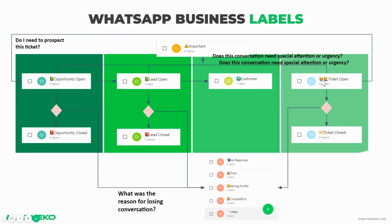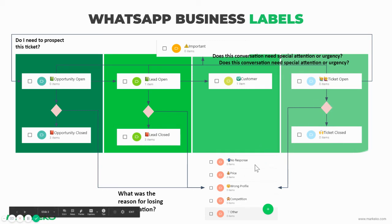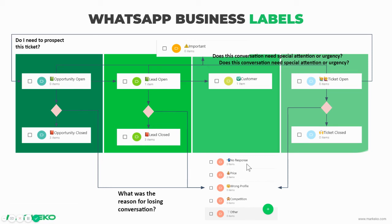Then you have tickets. If I have specific support tickets or things related to the product, I have tickets that are open. If I close that ticket or lose it, I can say ticket closed — or reasons like no response, price, wrong profile, competition. Usually with tickets it's no response; a lot of people ask questions but won't respond. If I'm able to resolve it, I just close the ticket and I'm done.